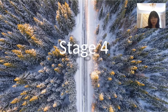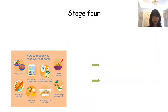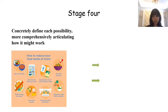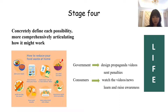Now I'm going to talk about stage four. The first step is to concretely define each possibility. The government can design propaganda videos on social media or in newspapers to appeal to people about the benefits of reducing household waste and urge them to separate waste. Additionally, penalties should be set for littering: if the number of times garbage is not properly sorted exceeds three times, residents will be fined $40. Consumers can watch online videos and newspapers to acquire knowledge and build awareness of reducing household waste.